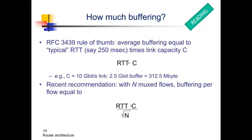A problem: in a real router, a single queue does not store packets of a single connection but packets of multiple connections. If you have multiple flows you can apply this rule of thumb. Another problem is how to measure the round-trip time when different flows follow different paths in the network. In this case, the round-trip time is estimated by taking the worst round-trip time imaginable in the network or internet, which is usually close to 250 milliseconds.